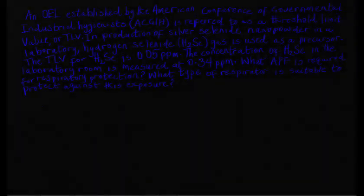In Scenario 2, an OEL established by the American Conference of Governmental Industrial Hygienists, also known as ACGIH, is referred to as a threshold limit value, or TLV. In the production of silver selenide nanopowder in a laboratory, hydrogen selenide gas is used as a precursor. The TLV for hydrogen selenide is 0.05 parts per million.